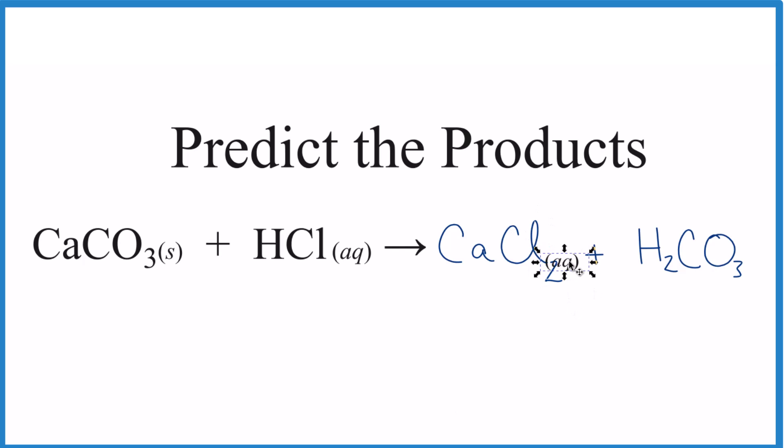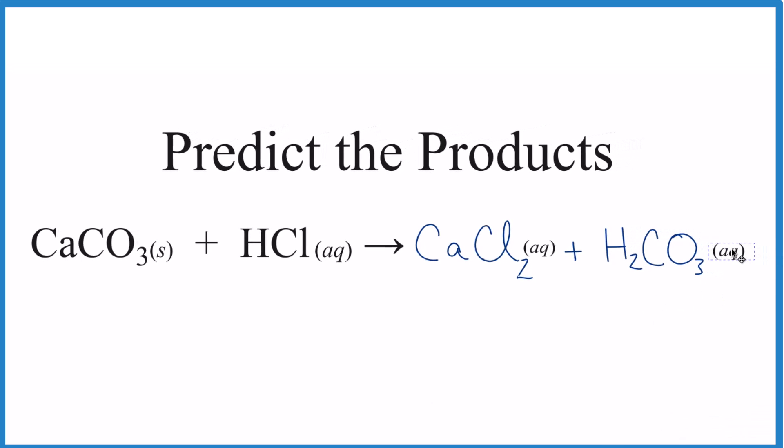Since chlorides are very soluble, this should be aqueous here. And then that H2CO3, that's carbonic acid. So the carbonic acid there is also going to be aqueous. These are the products that we end up with.